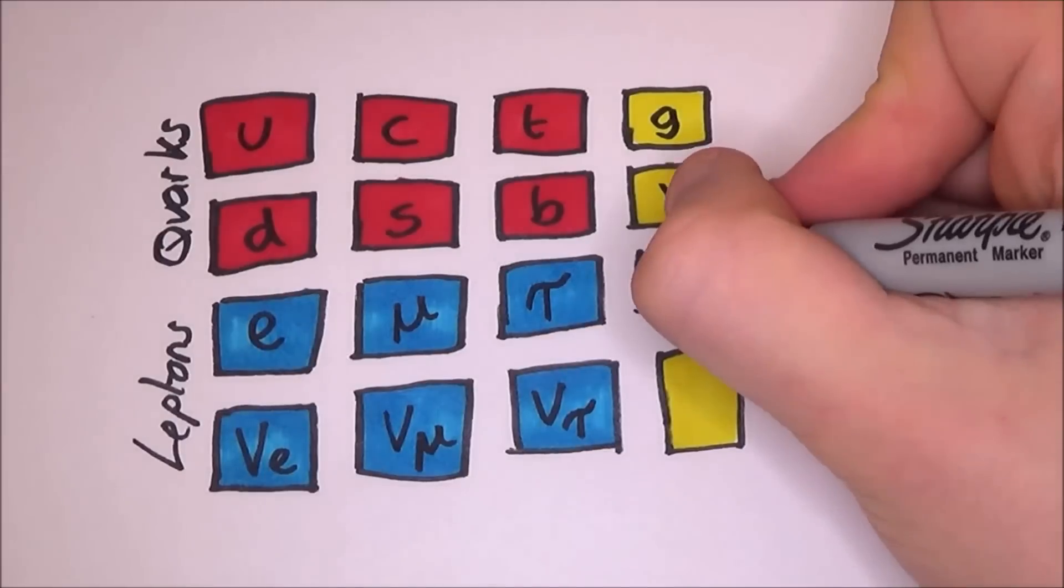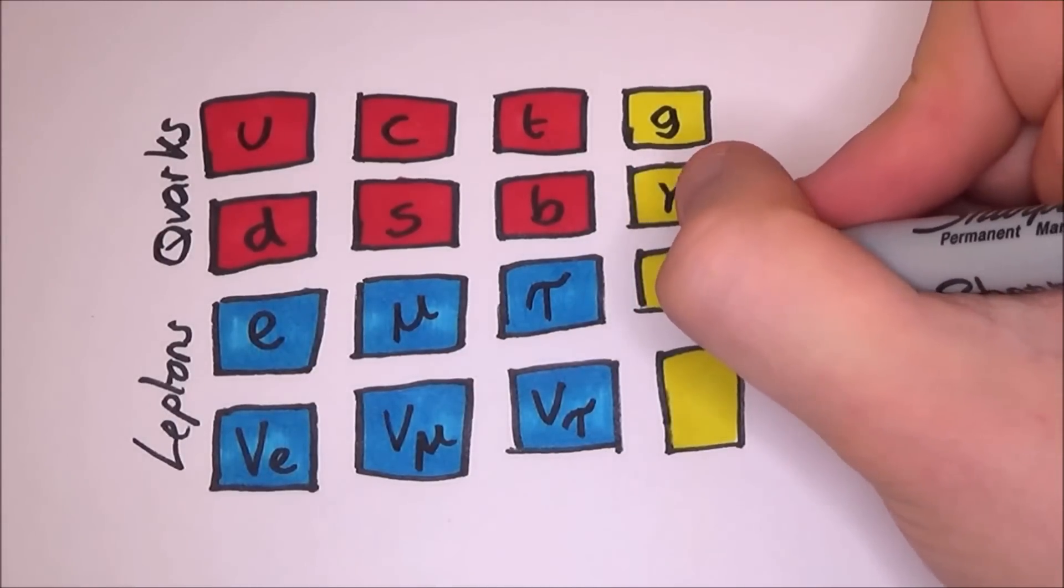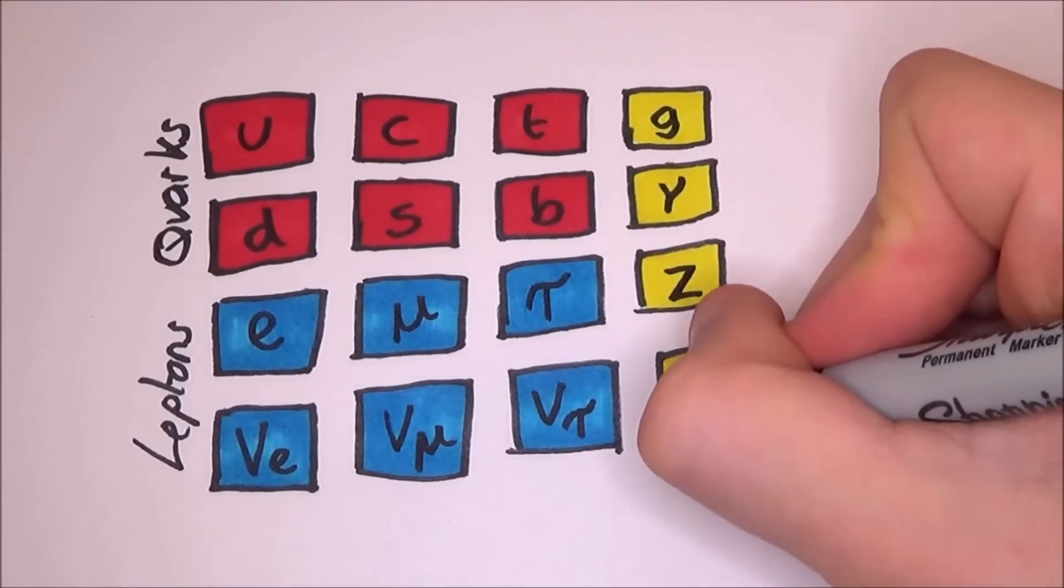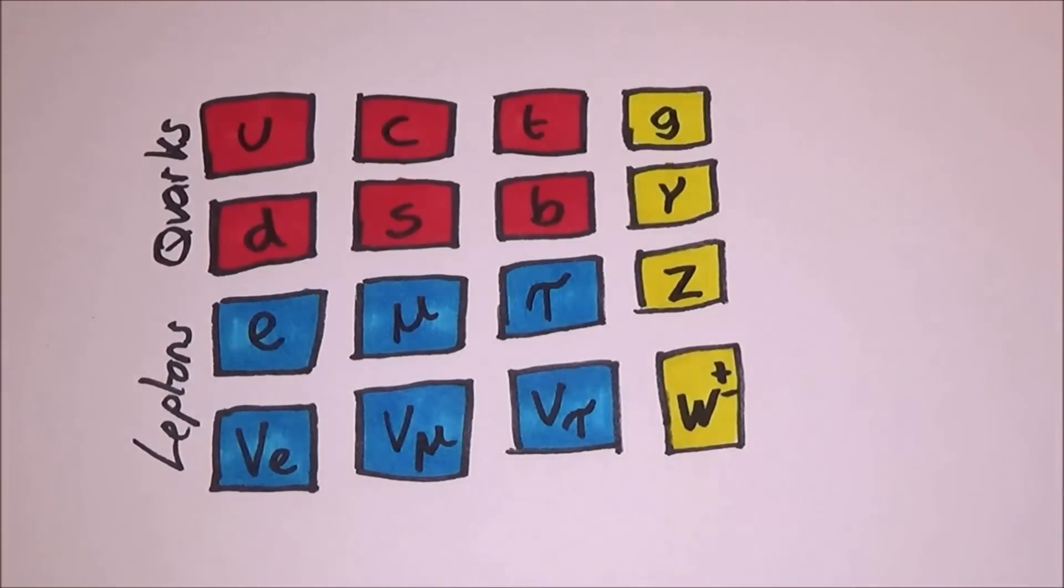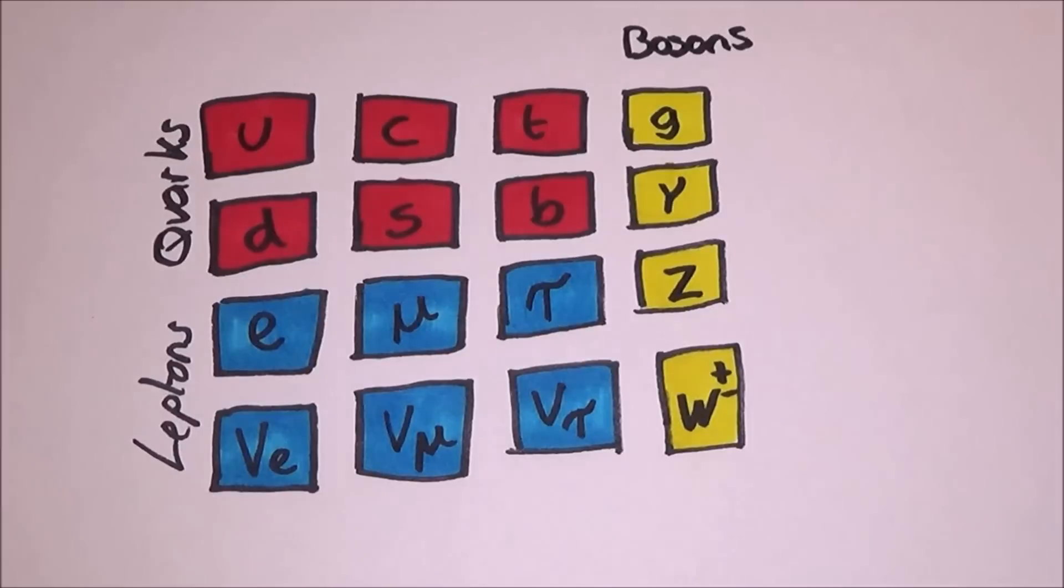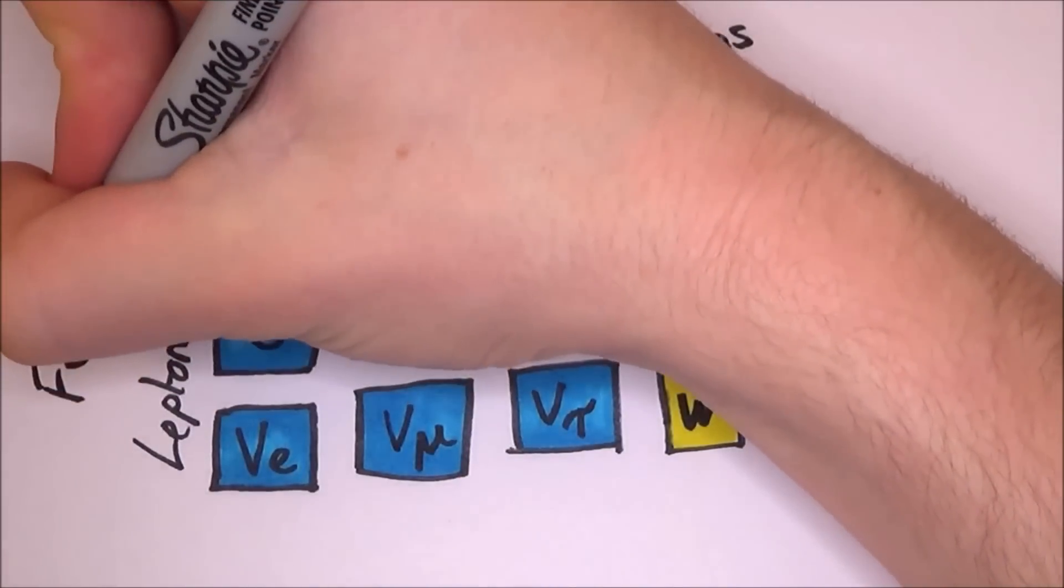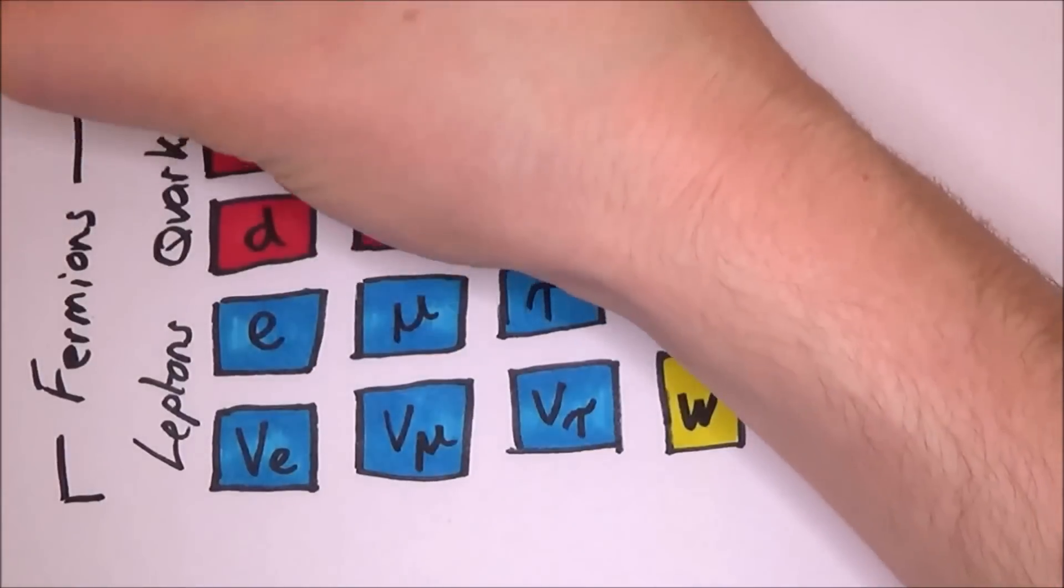There are then five bosons: the gluon, the photon, the z boson, the w plus and minus boson, which all have their own mass, charge and spin as well. Quarks and leptons are both fermions.